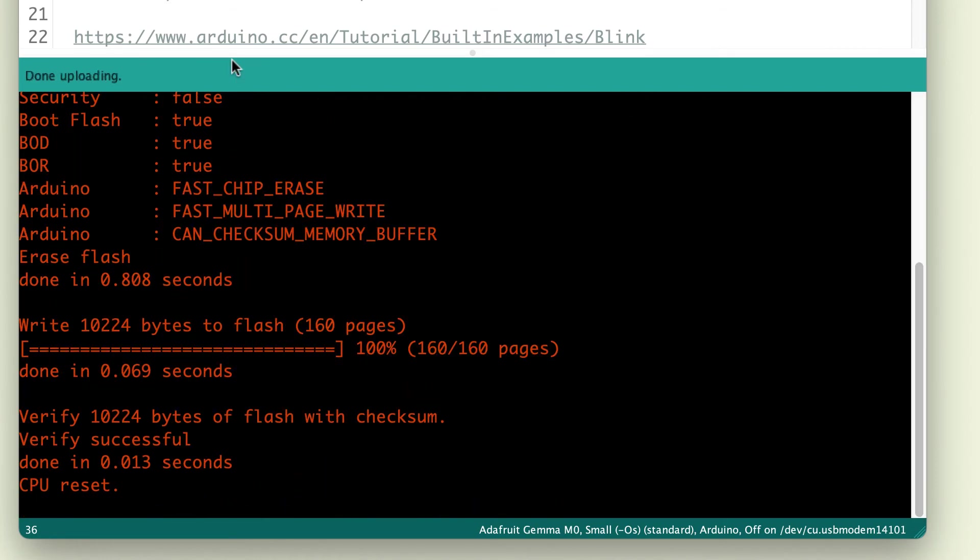There. Now this looks like a lot of red text and might be very alarming. But that's okay. We've got verify successful right here in that last chunk. So even though it's bright red, it's not errors. It's just information. So verify successful. That's what we're looking for. And our board should be giving our blink program. And indeed, there it is. Blinking on and off with one second on and one second off over and over.